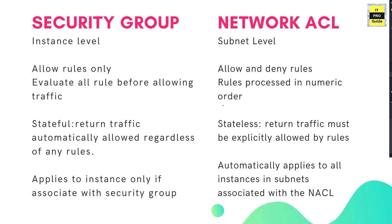Now let us quickly go through the differences between security groups and network ACL. In a security group, the firewall is applied at instance level; network ACL applies at subnet level. Security groups allow only allow rules — you cannot create deny rules. Network ACL supports both allow and deny rules. In network ACL, rules are processed in numeric order, whereas security groups evaluate all rules before taking any action. Security groups are stateful, meaning return traffic is automatically allowed regardless of other rules. Network ACL requires you to explicitly allow rules for both inbound and outbound traffic. Finally, security groups apply to an instance only if you associate them, whereas network ACL automatically applies to all instances in the associated subnet.